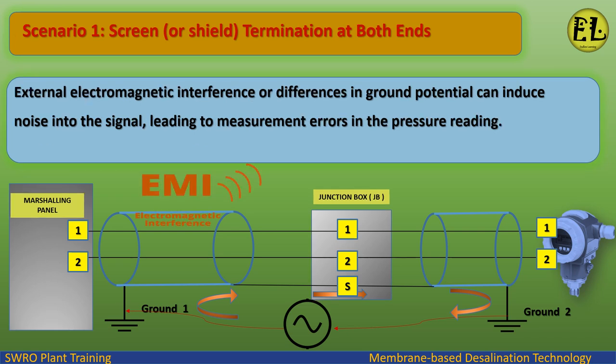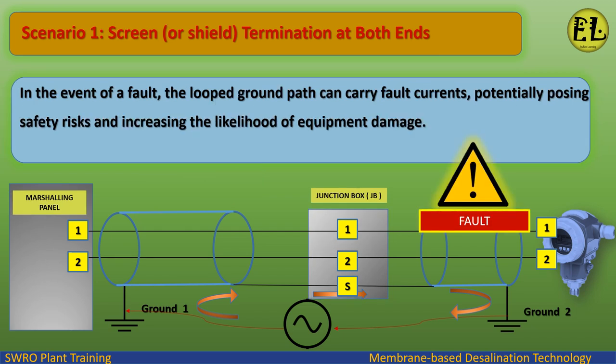External electromagnetic interference or differences in ground potential can induce noise into the signal, leading to measurement errors in the pressure reading. In the event of a fault, the looped ground path can carry fault currents, potentially posing safety risks and increasing the likelihood of equipment damage.